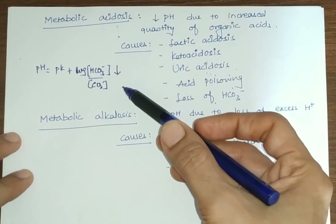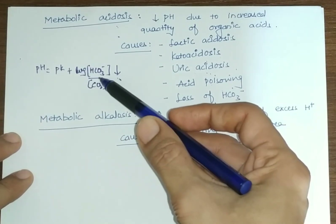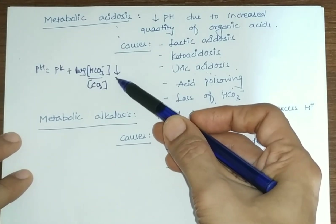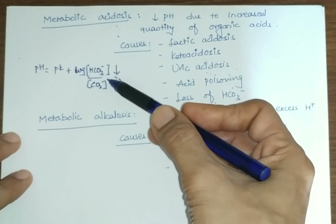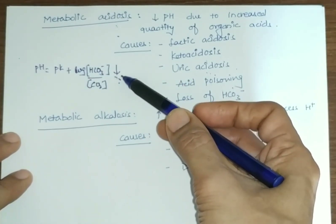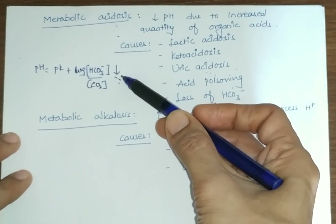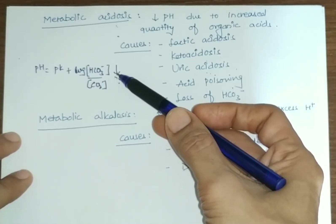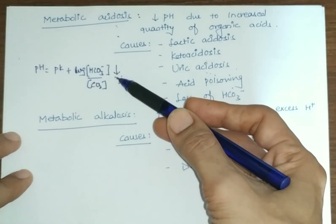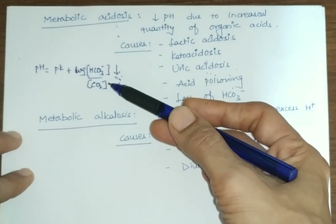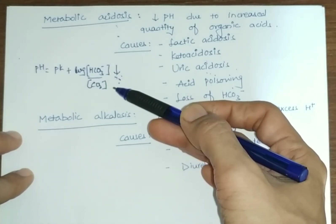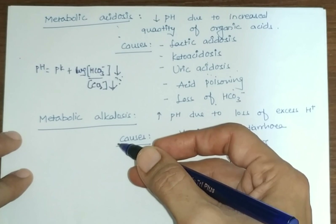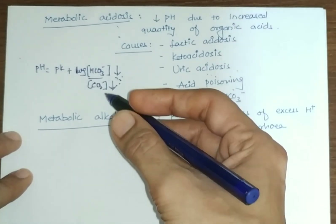In uncompensated metabolic acidosis, bicarbonate ions decrease because they are used to buffer H+ ions. In the respiratory compensatory mechanism, increased H+ concentration stimulates respiratory centers and peripheral chemoreceptors, producing hyperventilation — known as Kussmaul breathing in diabetic patients. This hyperventilation excretes CO2, decreasing CO2 concentration.